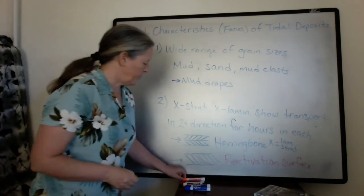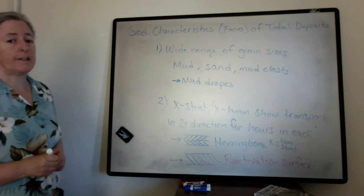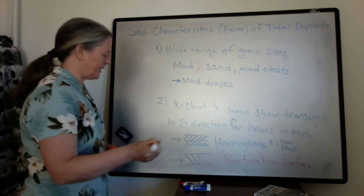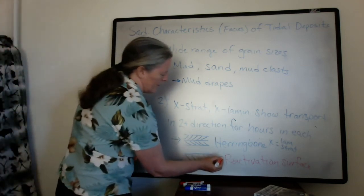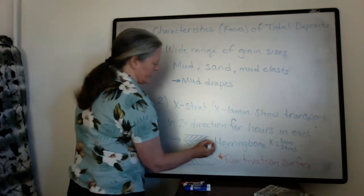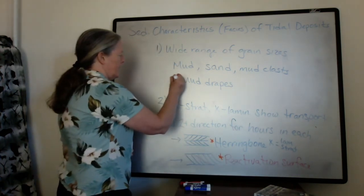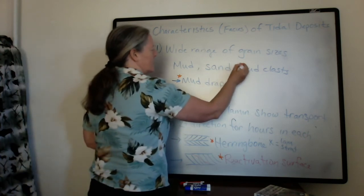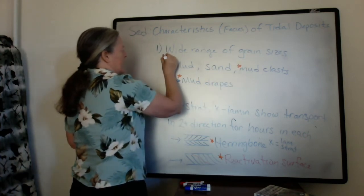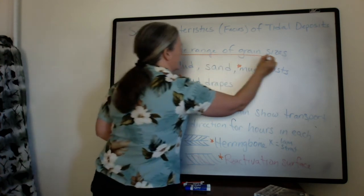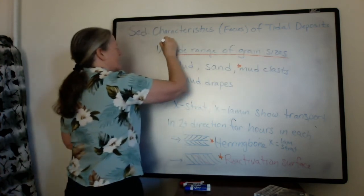So if we look at tidal facies, the types of things we expect to see are these reactivation surfaces, herringbone cross stratification, mud drapes, mud clasts, and overall a large range of grain sizes.